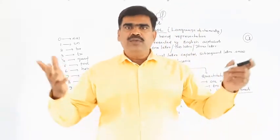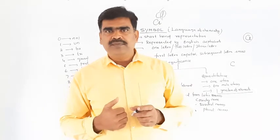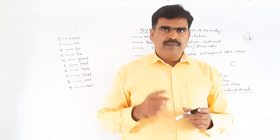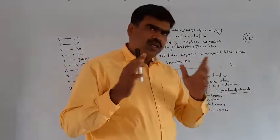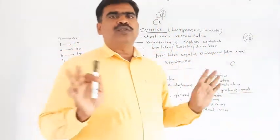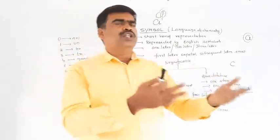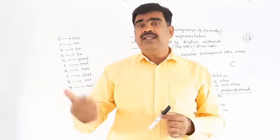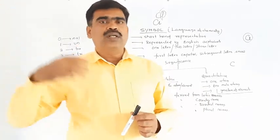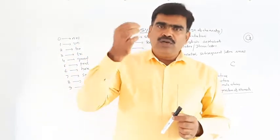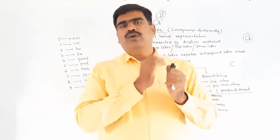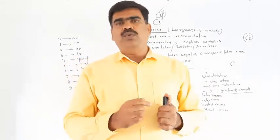Cf stands for Californium, named after the University of California — the most famous laboratory. So the symbol of an element can come from its Latin name, the name of a scientist, a planet, a country, or an important laboratory. There are many stories from the scientists.